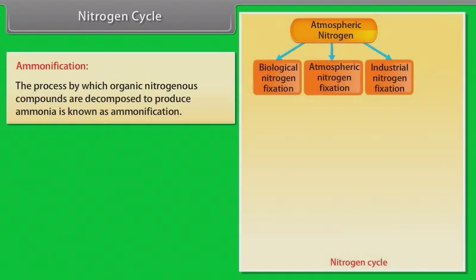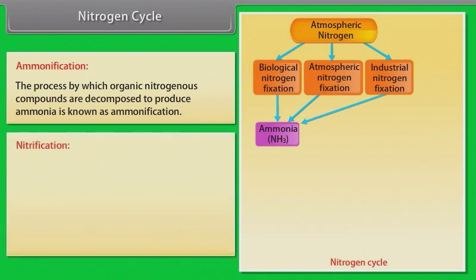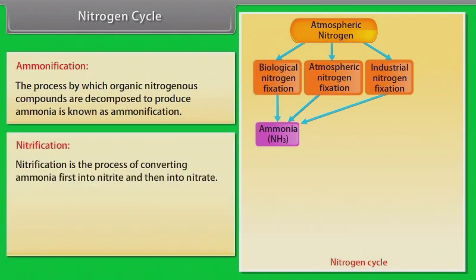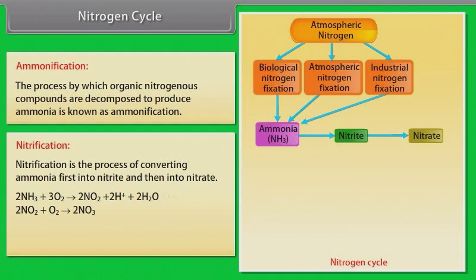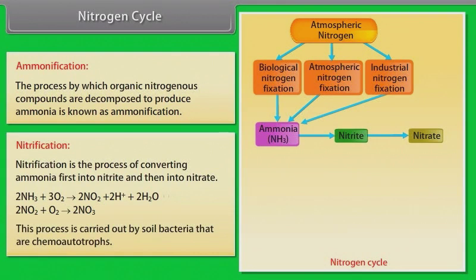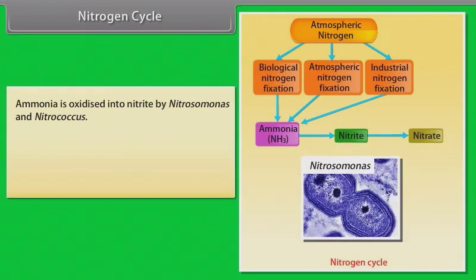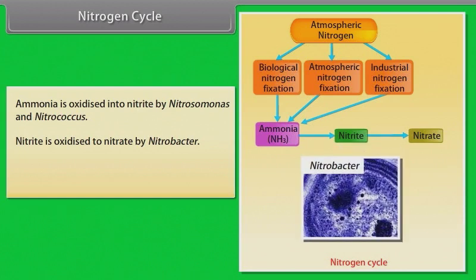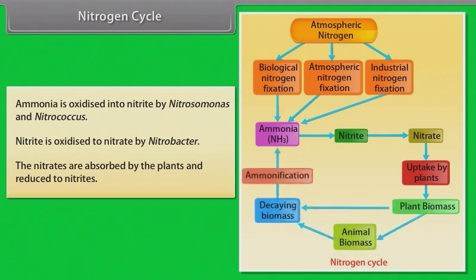Ammonification: the process by which organic nitrogenous compounds are decomposed to produce ammonia is known as ammonification. Nitrification: nitrification is the process of converting ammonia first into nitrite and then into nitrate. The reactions are: 2NH₃ + 3O₂ → 2NO₂⁻ + 2H⁺ + 2H₂O; and 2NO₂⁻ + O₂ → 2NO₃⁻. This process is carried out by soil bacteria that are chemoautotrophs. Ammonia is oxidized into nitrite by Nitrosomonas and Nitrococcus. Nitrite is oxidized to nitrate by Nitrobacter. The nitrates are absorbed by plants and reduced to nitrites.